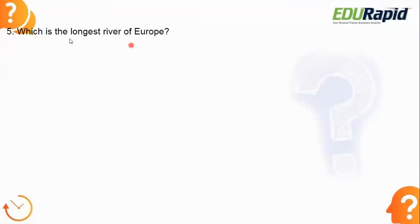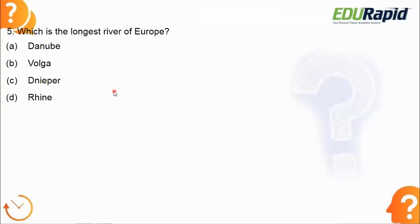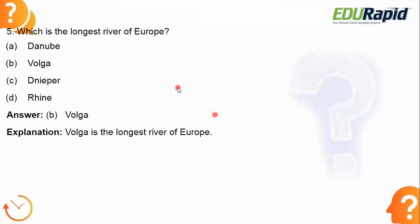Next: which is the longest river of Europe? The answer is option B — the Volga River. The Volga is the longest river of Europe.